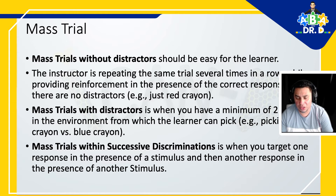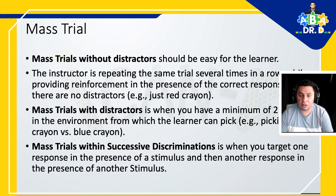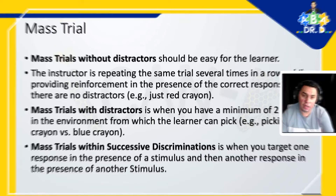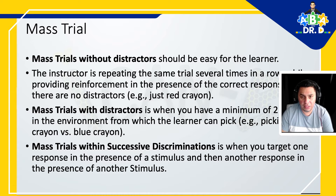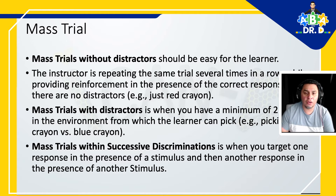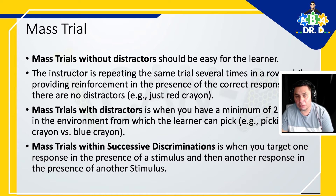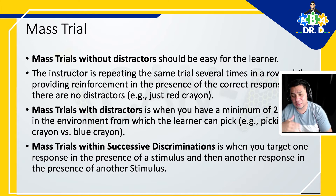You can also have mass trials with successive discriminations, which is when you're targeting one response in the presence of a stimulus and then another response in the presence of another stimulus. For example, working on color identification: I say 'touch the red crayon,' the child touches it, then I switch to 'touch the blue crayon.' I could do a couple of these trials in a row — touch the blue crayon, touch the blue crayon, then move to touch the red crayon — back and forth. We'll get into random rotation because it does integrate successive discrimination across different types of instructions, but for this procedure we're focusing on one target at a time.